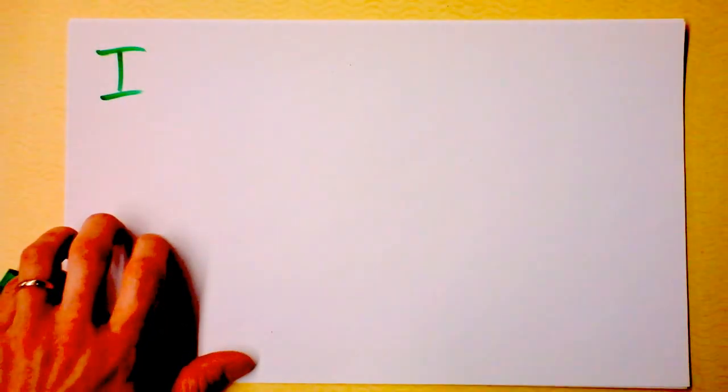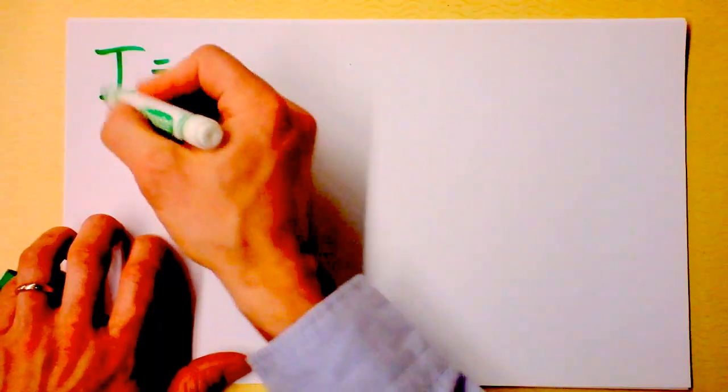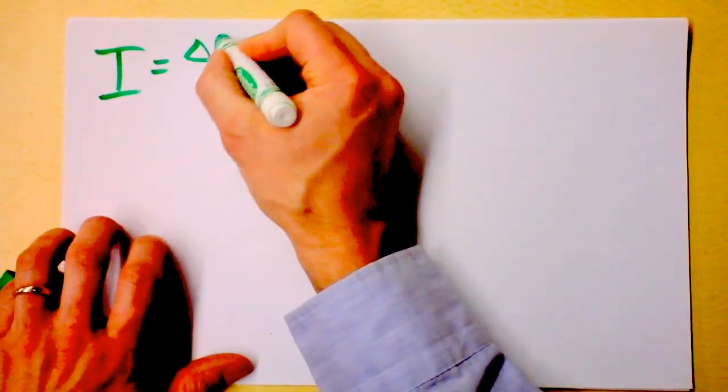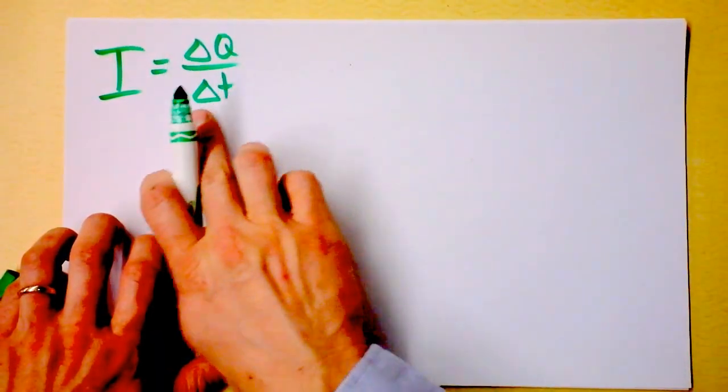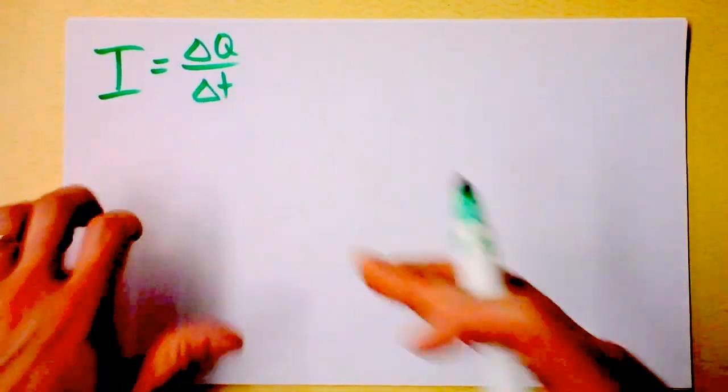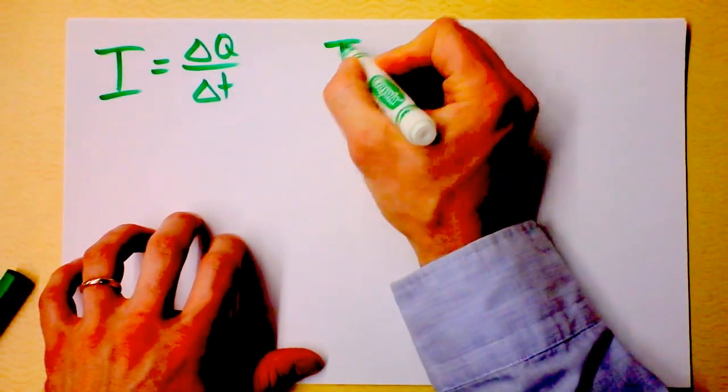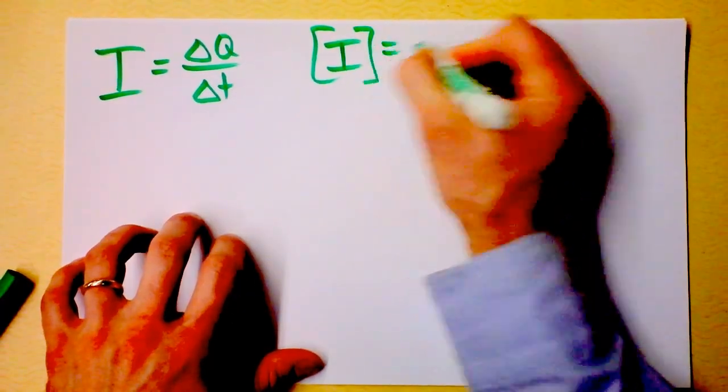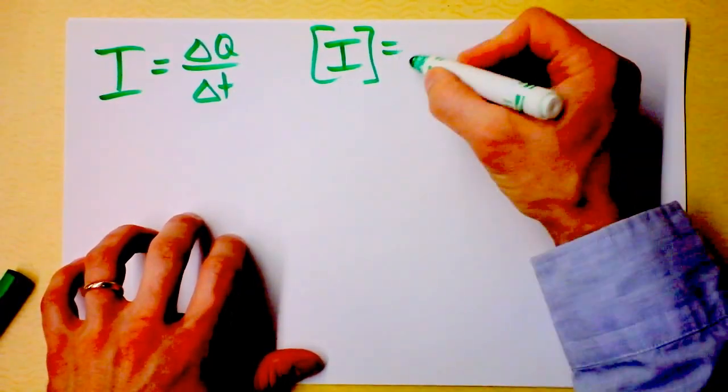While we're on current I'll just tell you that the letter for current is I, because the I of physics that's always watching the charges get through. It's charge going through an area divided by the time it takes for that charge to go. The units of current are named after the Frenchman Ampère.